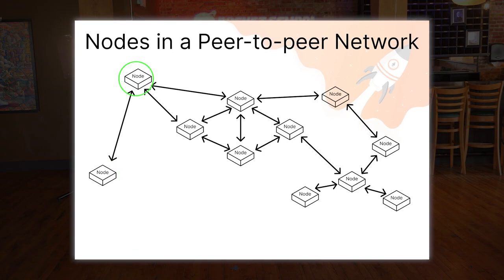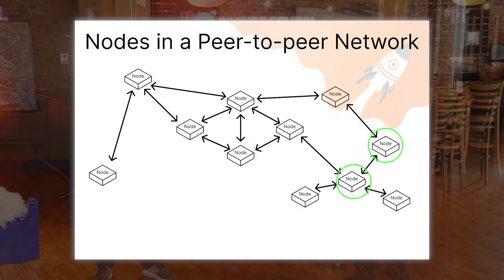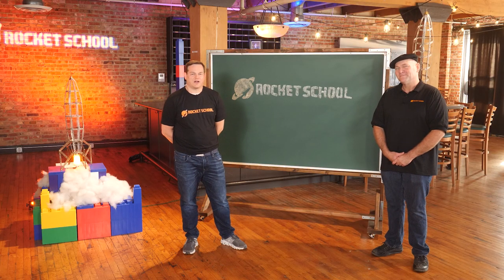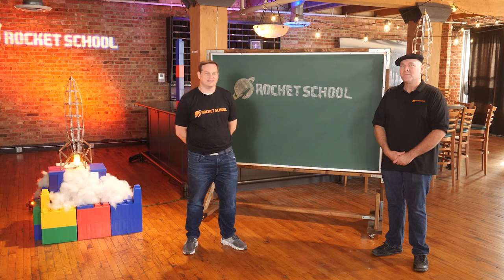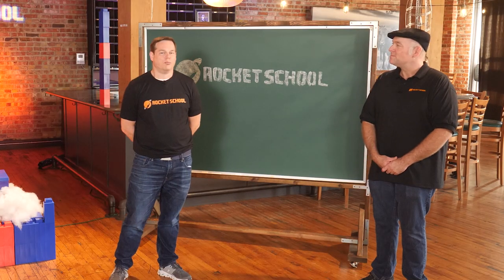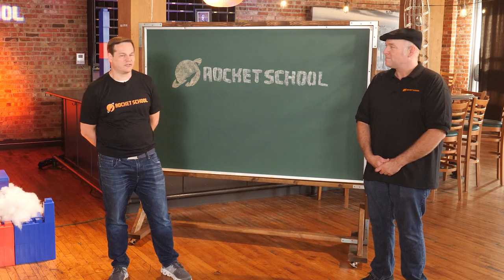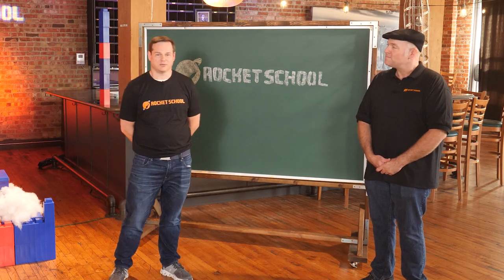Everything that happens on a blockchain is ultimately just nodes rapidly validating and sharing messages between themselves and updating their internal databases accordingly. Ethereum is tens of thousands of nodes, operated by a similarly large number of different entities including individuals and companies. The more decentralized the blockchain's node operators are, the more difficult it becomes to break any of these rules.